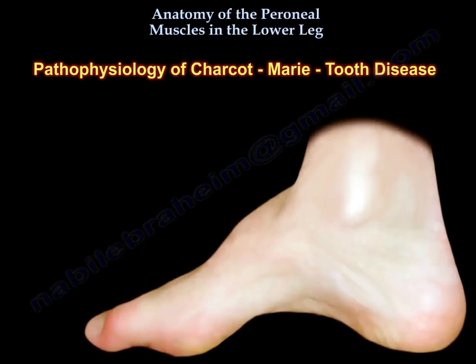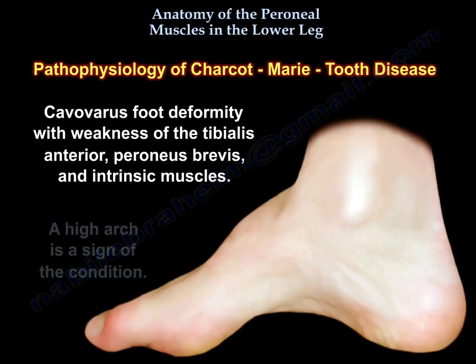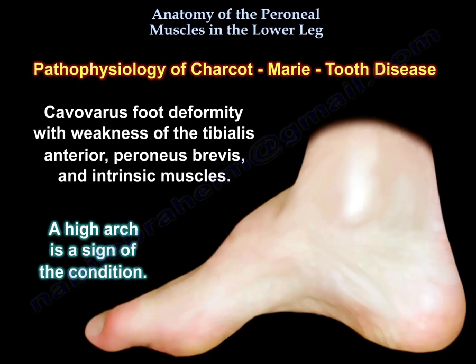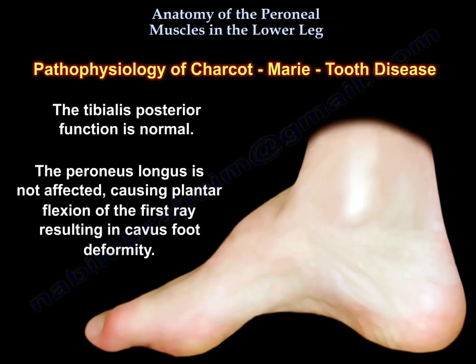Pathophysiology of Charcot-Marie-Tooth disease: cavus foot deformity with weakness of the tibialis anterior, perineus brevis, and intrinsic muscles. A high arch is a sign of the condition. The tibialis anterior function is normal. The perineus longus is not affected, causing plantar flexion of the first ray, resulting in cavus foot deformity.